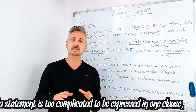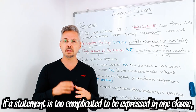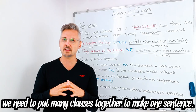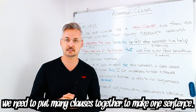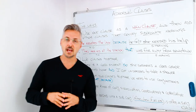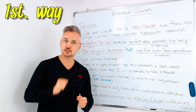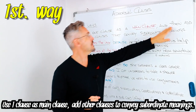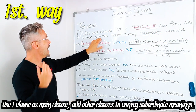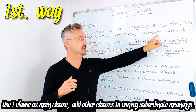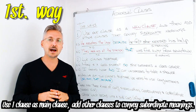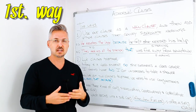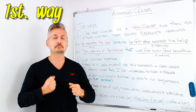If a statement is too complicated to be expressed in one clause, we need to put many clauses together to make one sentence. There are two ways in which we can do this. The first way: we use one clause as a main clause and then add other clauses to convey subordinate meanings. Subordinate means secondary — secondary in meaning, so second in importance.